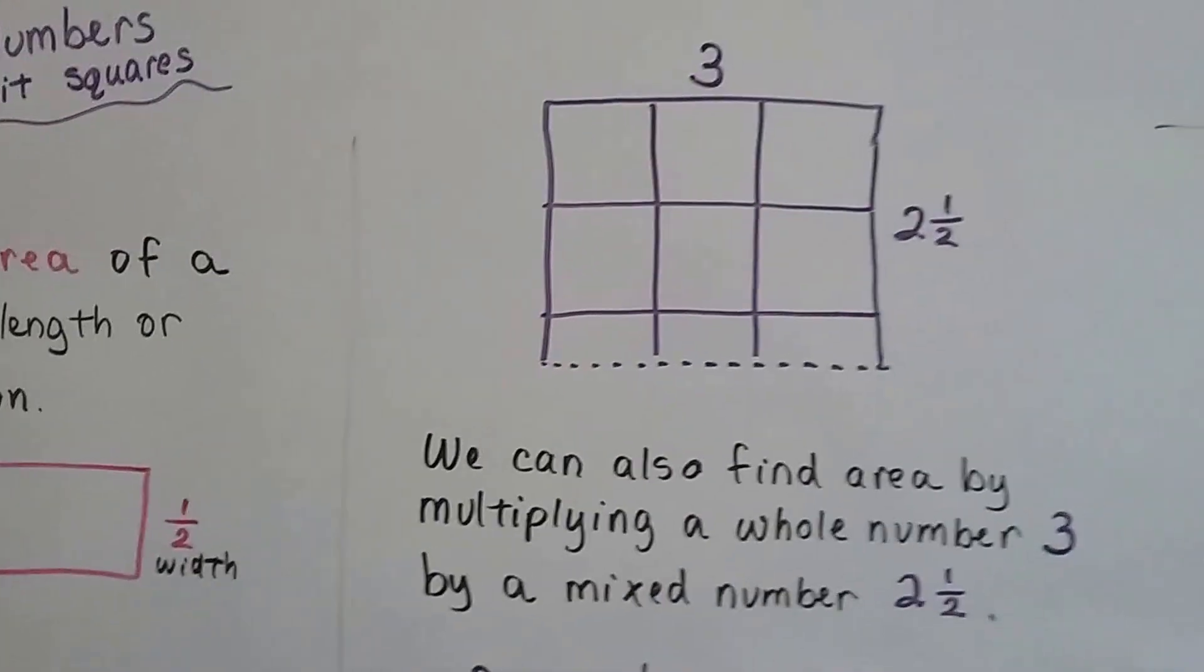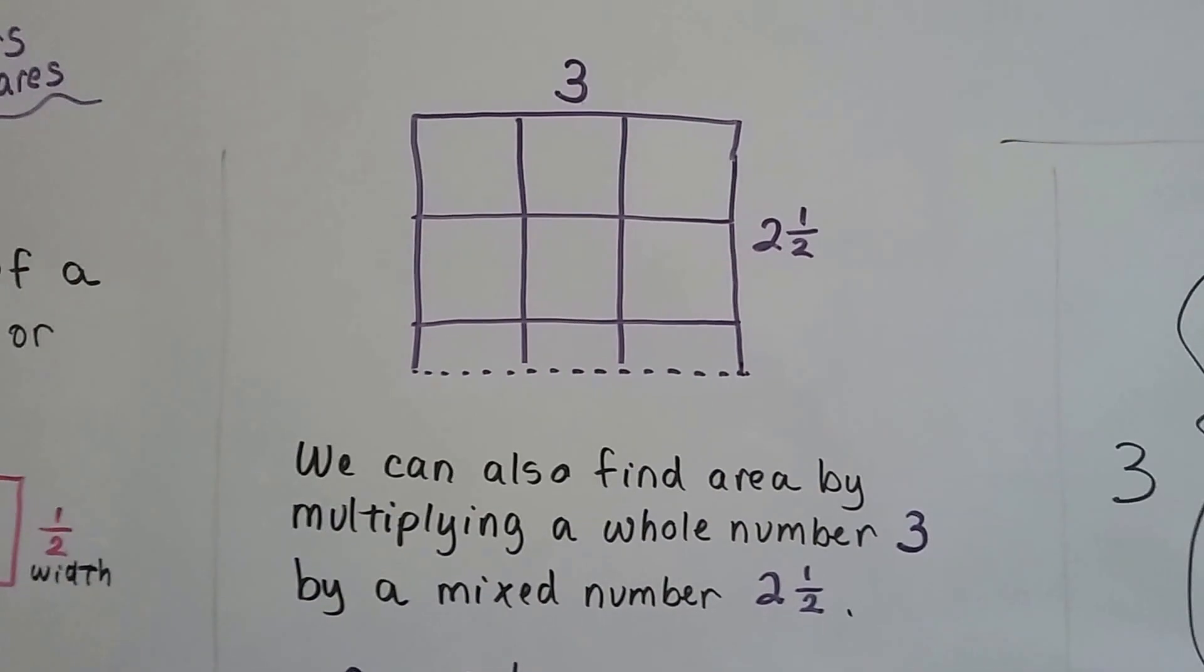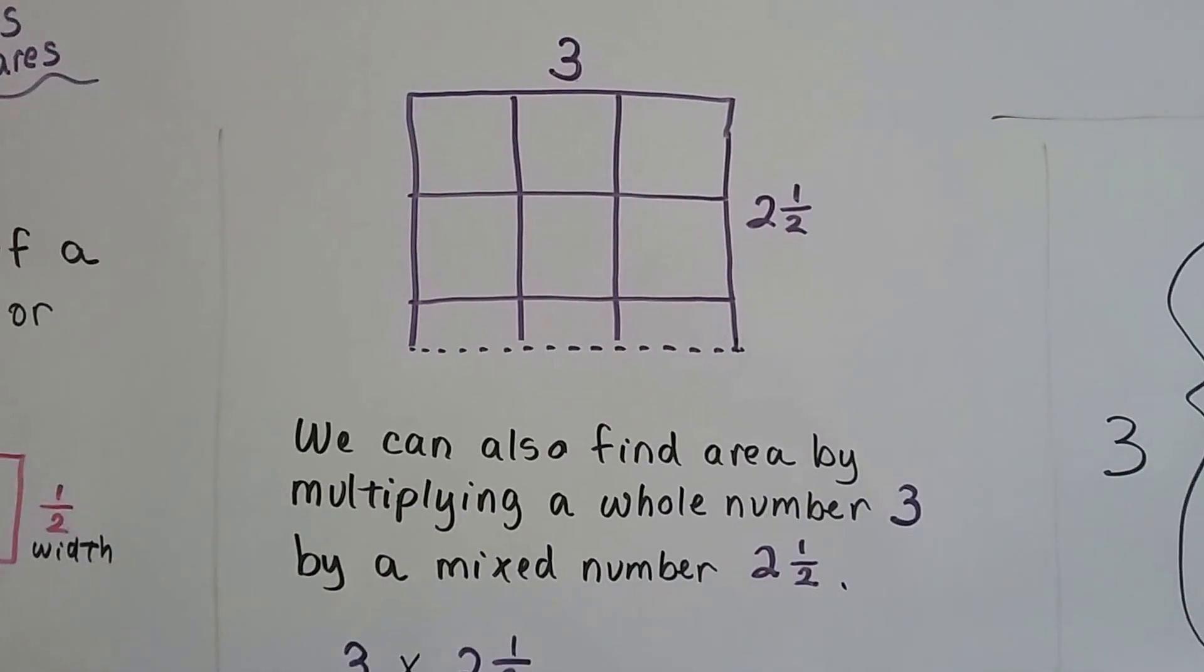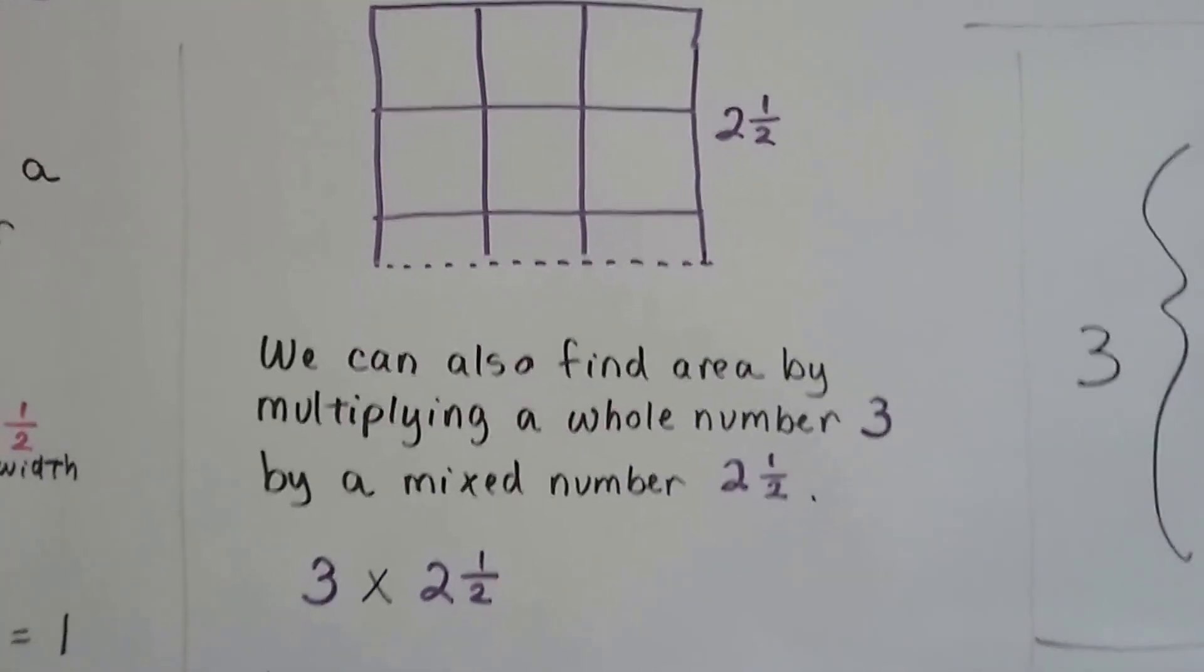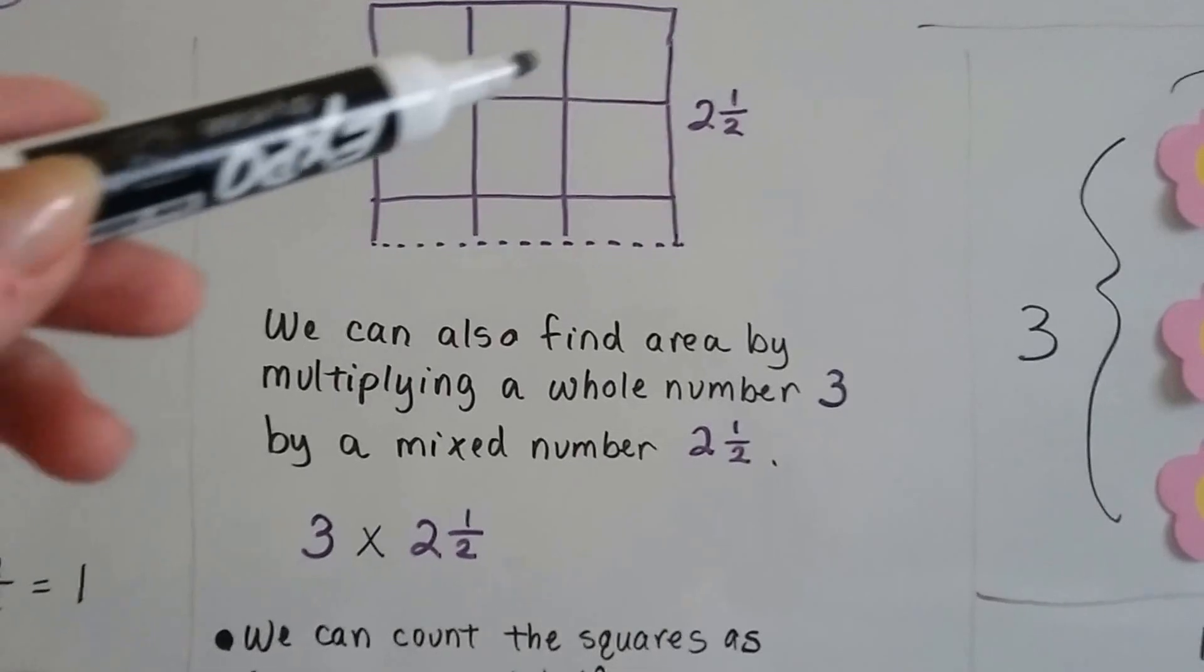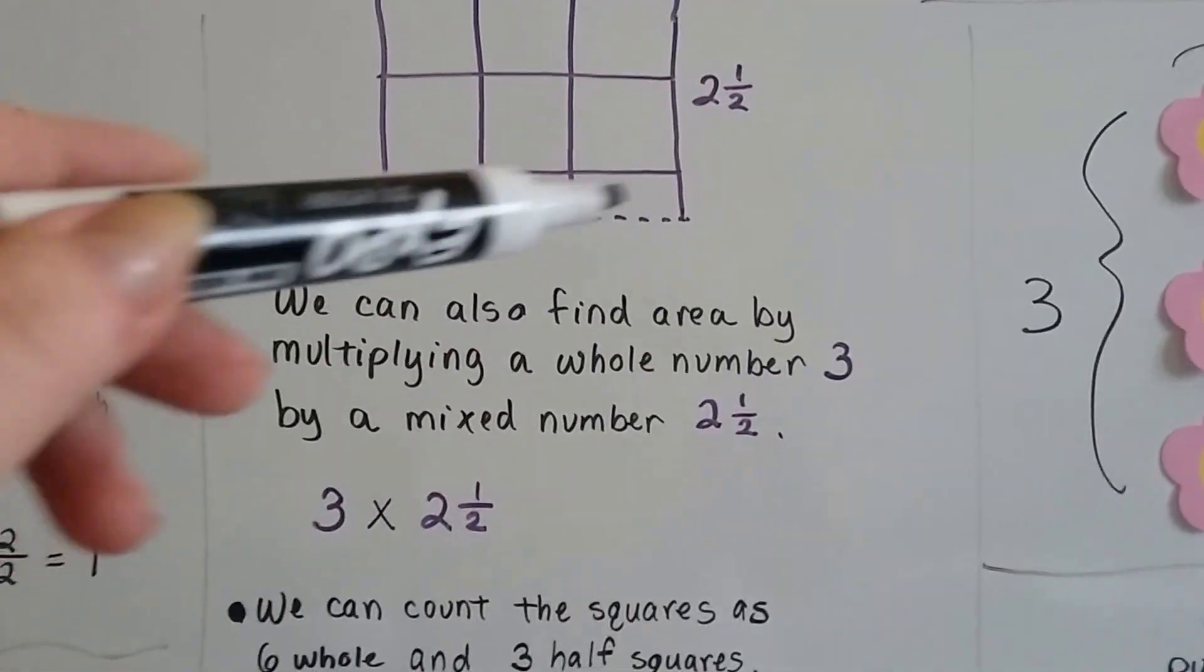So we've confined the area by multiplying a whole number 3 by a mixed number 2 and a half. We have 3 squares going across this way, but only 2 and a half going this way. We can count the squares as 6 whole squares here and 3 halves.